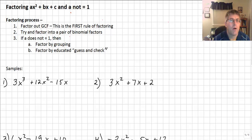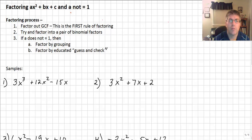Some of our process stays the same. Our process tells us to first factor out the greatest common factor — that's the first rule of factoring. Second, we'll always try to factor into a pair of binomial factors. If the coefficient on x squared does not equal 1, we'll want to factor by grouping — that's the most dependable way — or we can factor by what I call educated guess and check.